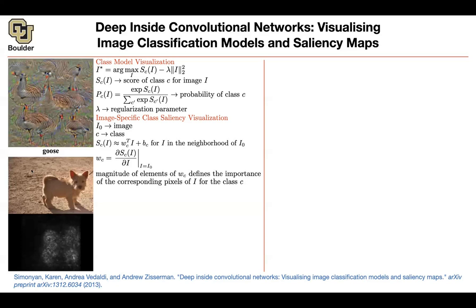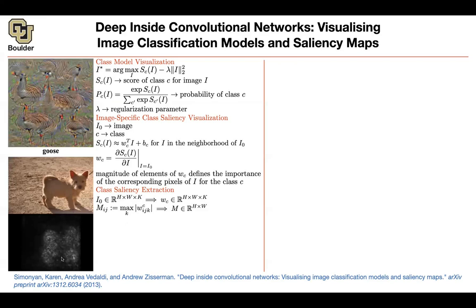The magnitude of each element of wc tells you how important that pixel is for the prediction being of class c. wc has the same size as your image, but you want to visualize it in 2D. Since it's a 3D tensor, you take the maximum of the absolute value along the channel dimension — collapsing red, green, blue into a single value. This gives you a 2D map with the height and width of your image that you can plot.